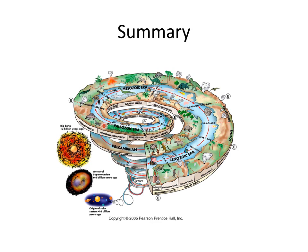After the Permian extinction, new dinosaurs and mammals arose. Then the big meteorite hit the Earth, the dinosaurs died out, and the mammals flourished. In the last well-known period — the Quaternary — humans came to be. We have actually been on Earth for a really short period of time; the Earth is much older and many life forms have come and gone before us.